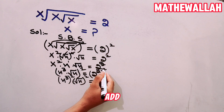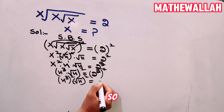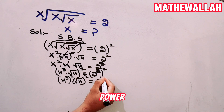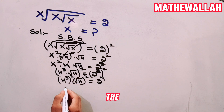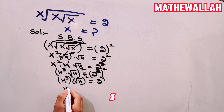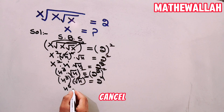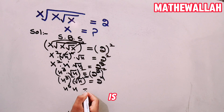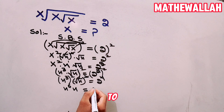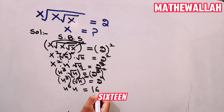We add the powers, so it becomes 2 to the power 4. Now the square root cancels, and it becomes x power 6 is equal to 2 to the power 4, which is equal to 16.